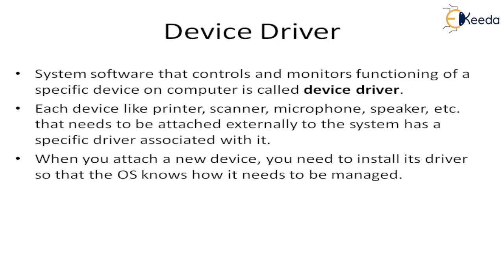The third type of system software is the device driver. Different types of hardware need to be compatible with the system, and for that compatibility we use device drivers. System software that controls and monitors the functioning of a specific device on a computer is called a device driver — for example, for printers, scanners, microphones, and speakers. For all external hardware devices, we need to install the device driver first before using that particular device on the system. When you attach a new device, you need to install its driver so that the operating system knows how it needs to be managed.